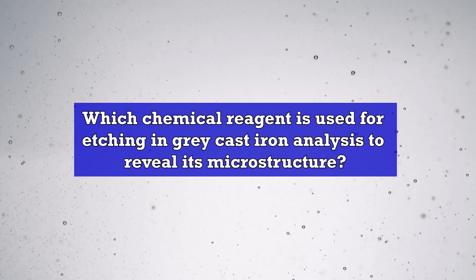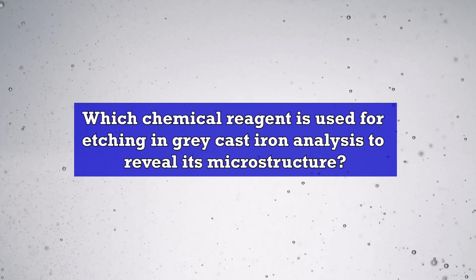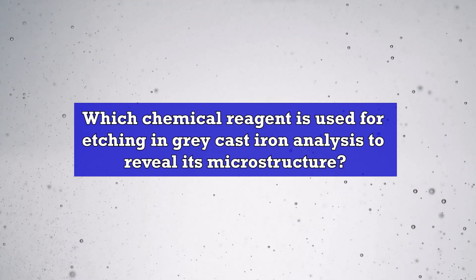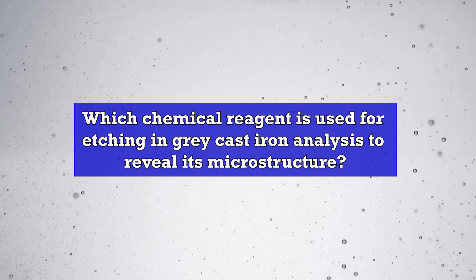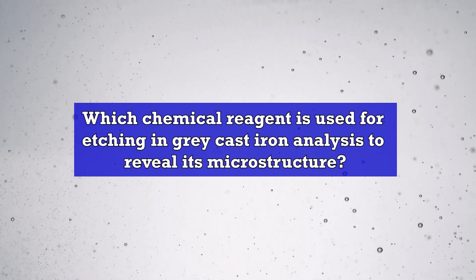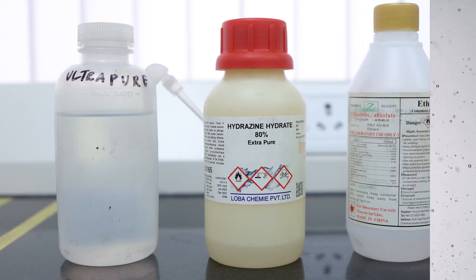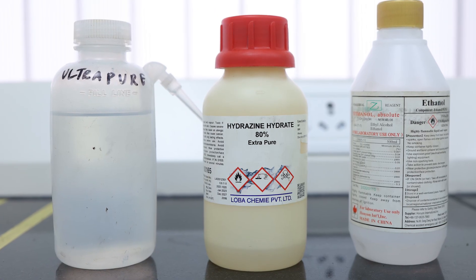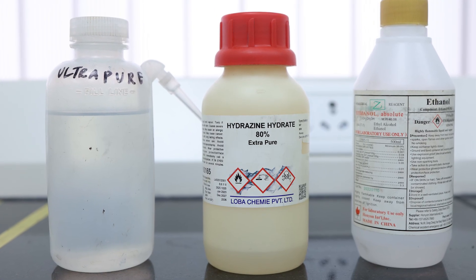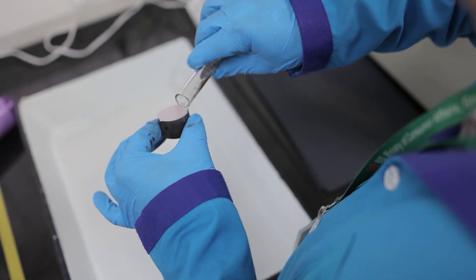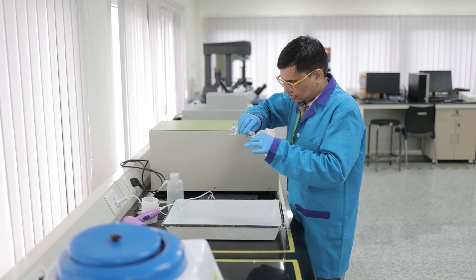Now let's recall what you have learned today. Which chemical reagent is used for etching in grey cast iron analysis to reveal its microstructure? That would be Nital solution, which is a mixture of nitric acid and alcohol used to etch metals.